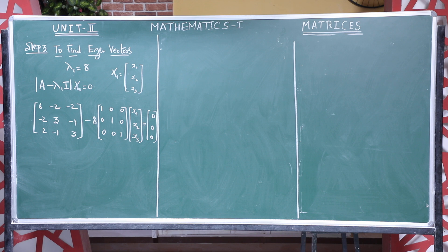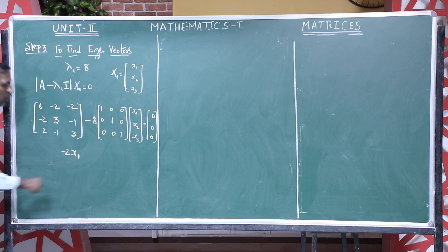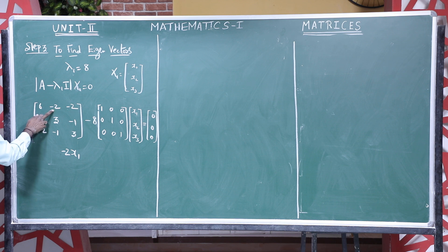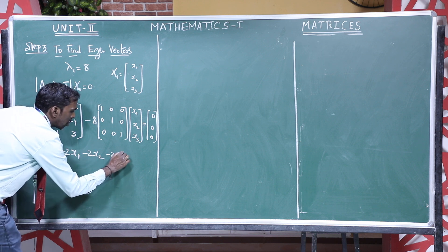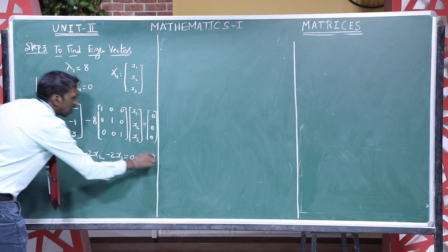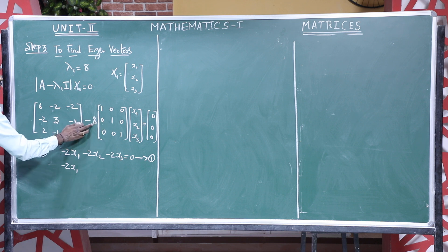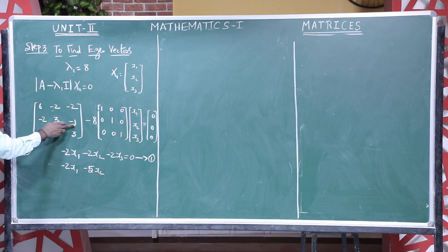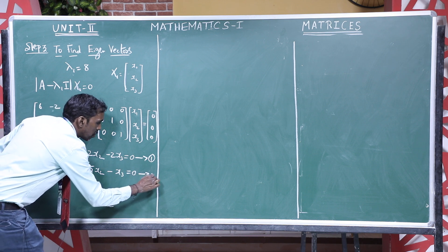Simplifying: only the diagonal values change. 6 minus 8 gives minus 2, so the first row gives: minus 2·X1 minus 2·X2 minus 2·X3 = 0 — this is equation 1. For the second row: minus 2·X1, and 3 minus 8 gives minus 5, so minus 5·X2, minus 1·X3 = 0 — this is equation 2.